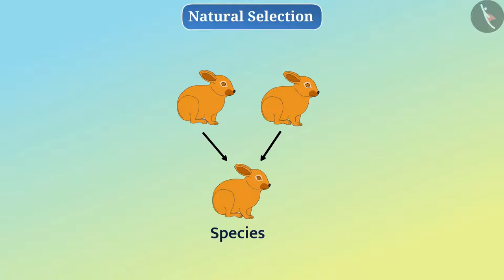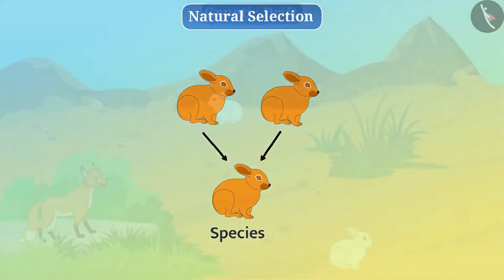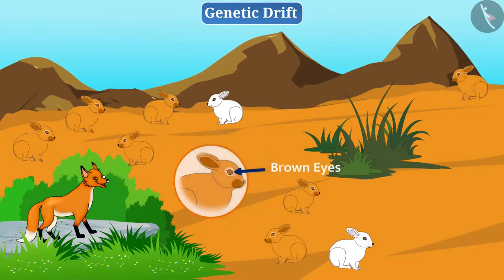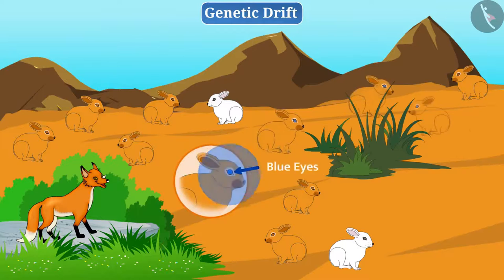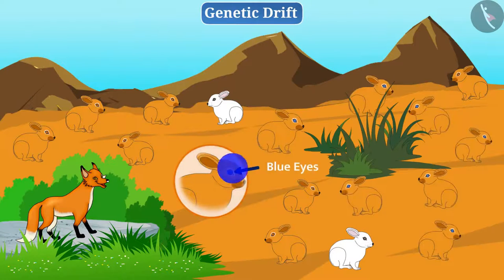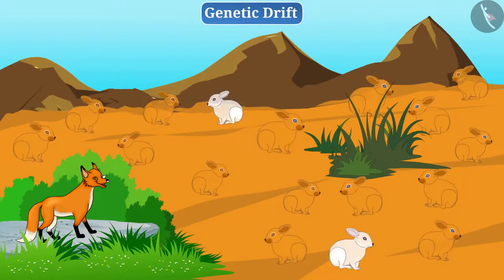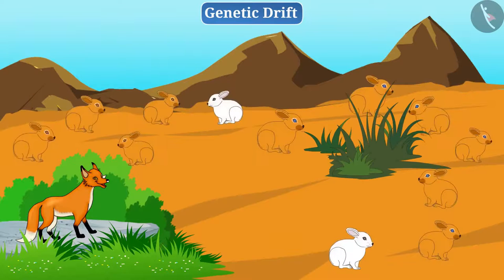Now let's talk about another interesting fact of evolution. Suppose a rabbit with brown eyes lives on the hill. Due to variation, rabbits with blue eyes are produced in the population. This time, only the eye colour has changed in the rabbits. Therefore, foxes can hunt all rabbits, which reduces the size of the rabbit population — that is, the number of rabbits is reduced.